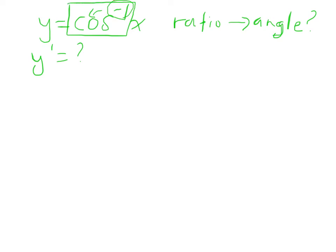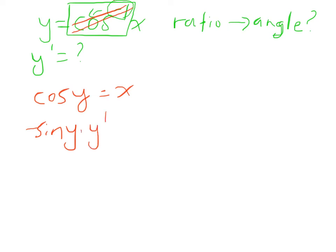So y equals inverse cosine of x. I want to change this to a more familiar equation by taking the cosine of both sides. Cosine of the left side gives cosine of y; cosine of the right side cancels the inverse cosine, leaving just x. Now I derive using the chain rule: the derivative of cosine is negative sine of y times y prime, equals the derivative of x, which is 1. Dividing both sides by negative sine of y gives y prime equals 1 over negative sine of y. But I want this in terms of x, not y.